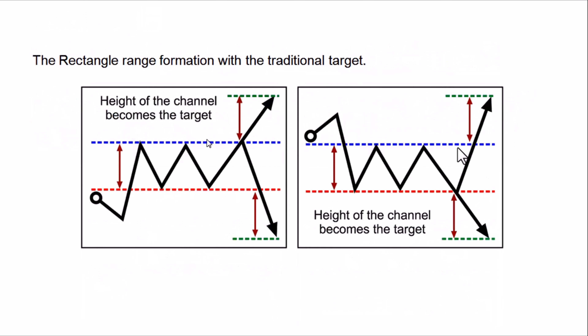So let's look at the rectangle range formation with a traditional target. If you are targeting profit in this market, you target the range between the highs and lows — that is how you set your take profit and stop loss. We call this a one-to-one ratio, and it can extend to two-to-one. If from the high to the low the range is 100 pips, there is a high probability that when the market breaks out in either direction, it will move 100 pips before coming back. The market may spike 100 pips, causing many people to enter a trade, then reverse.